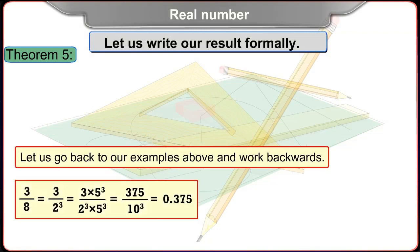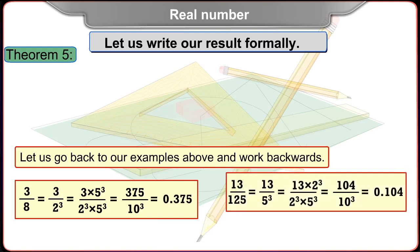Example 1: 3 upon 8 is equal to 3 upon 2 cubed, is equal to 3 into 5 cubed upon 2 cubed into 5 cubed, is equal to 375 upon 10 cubed.